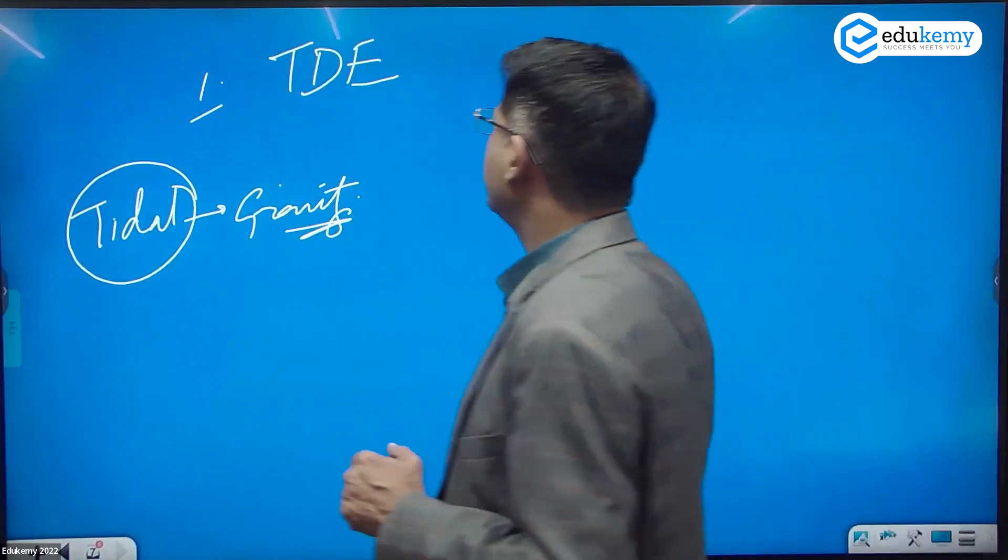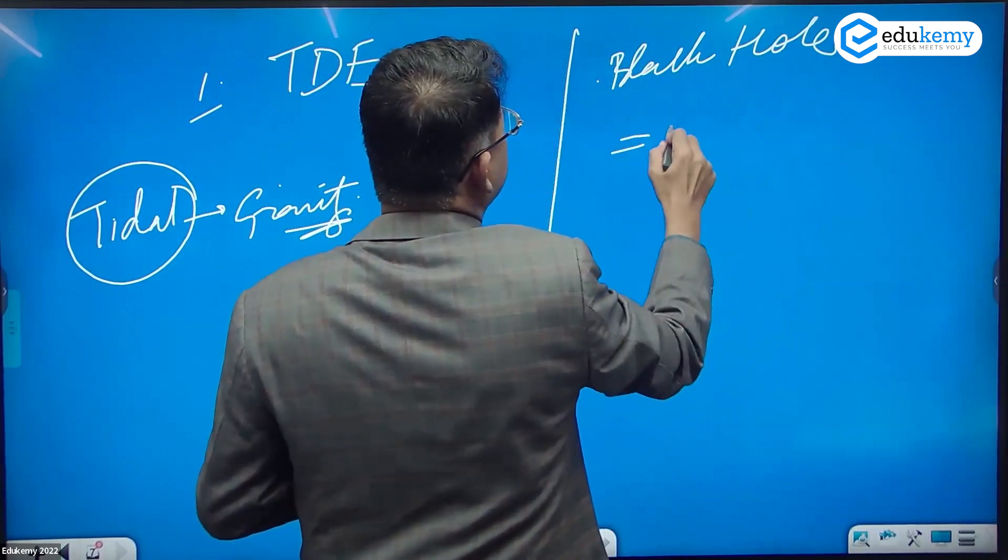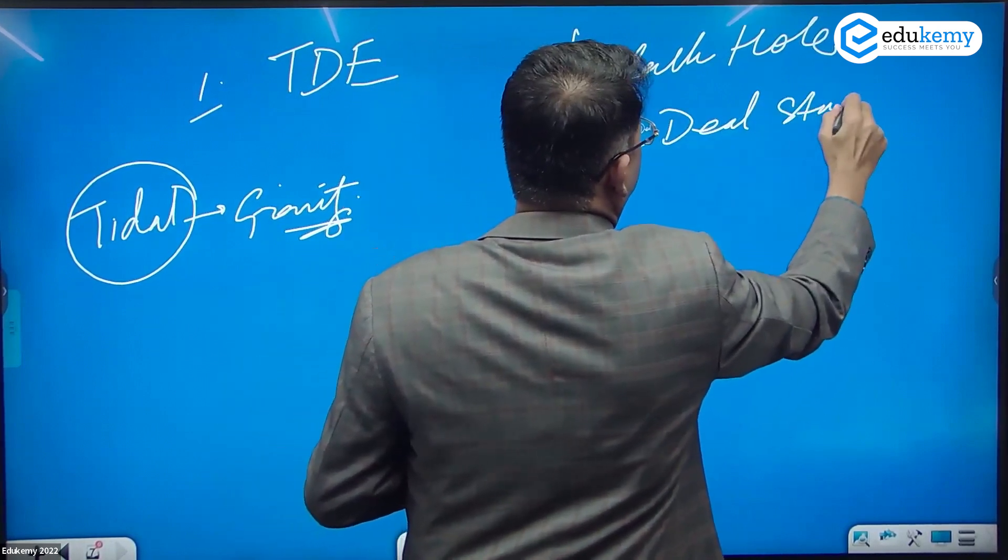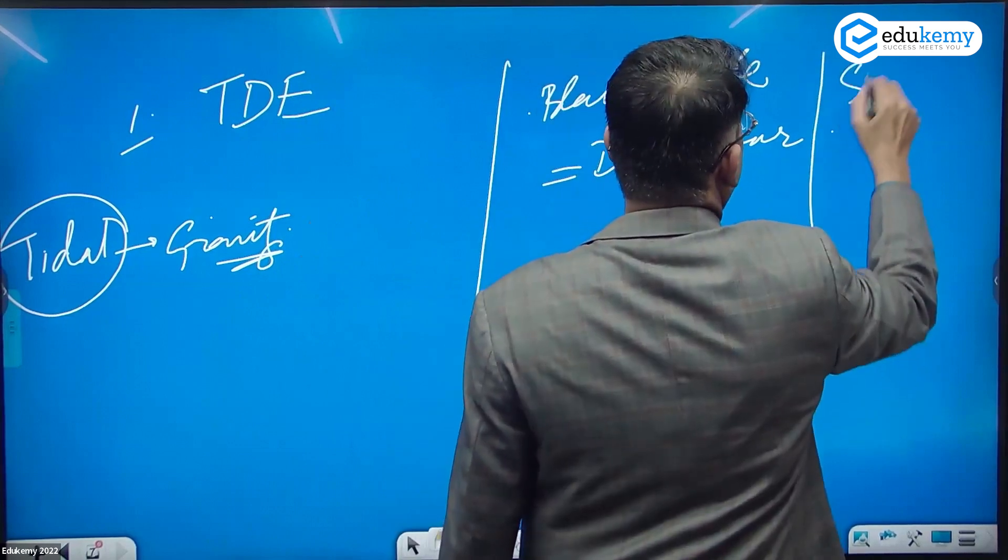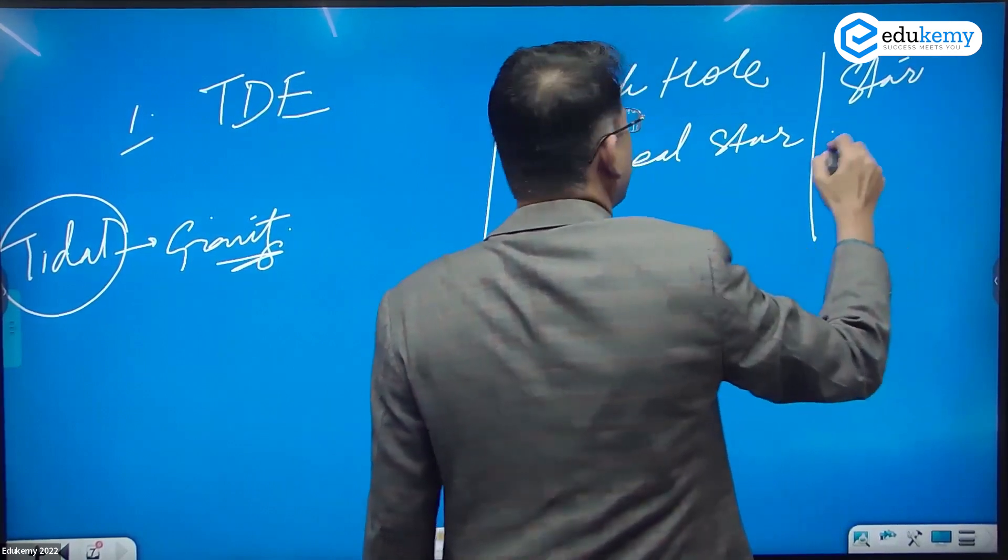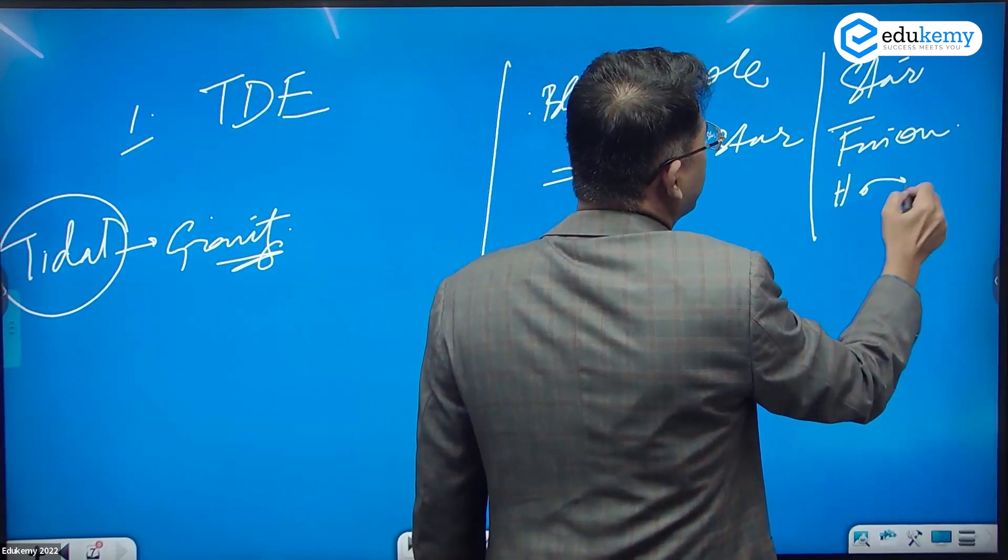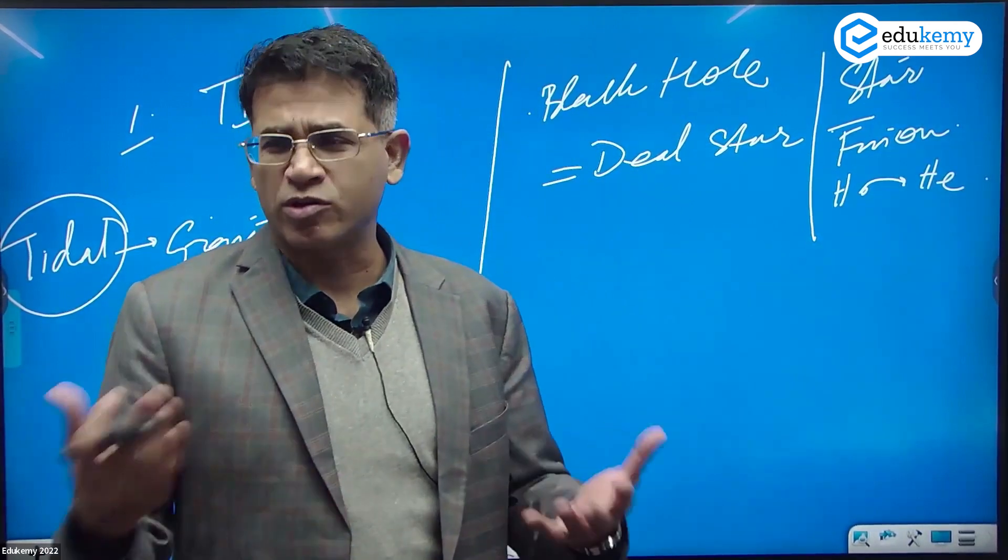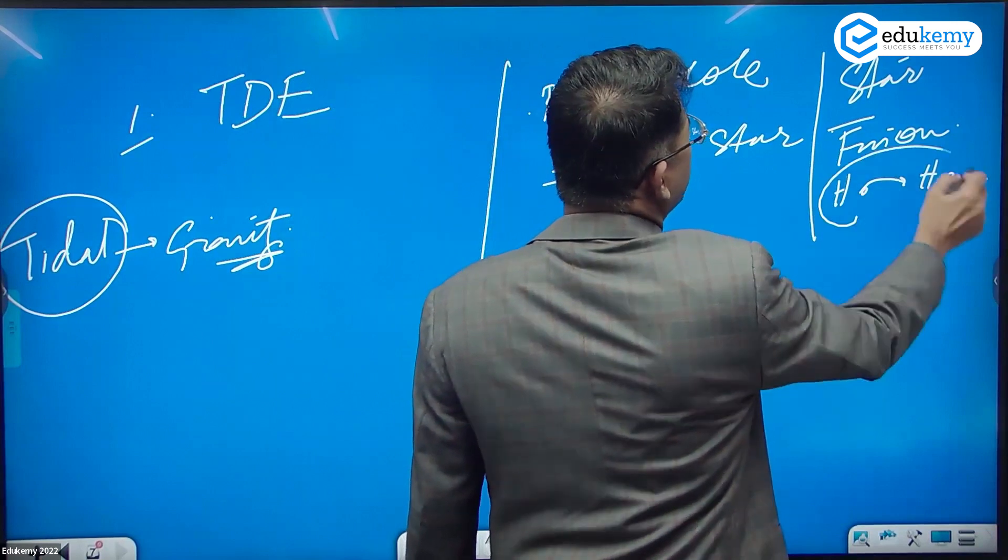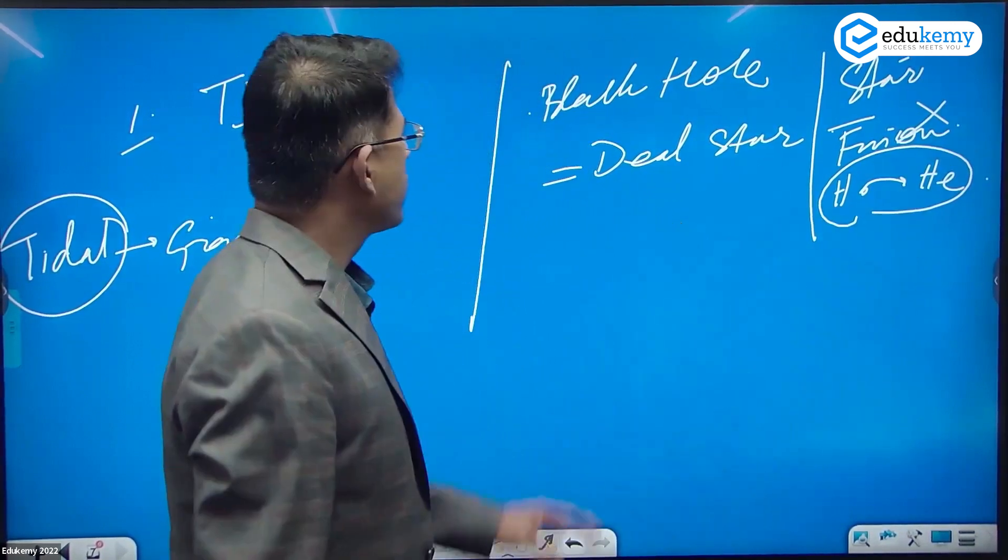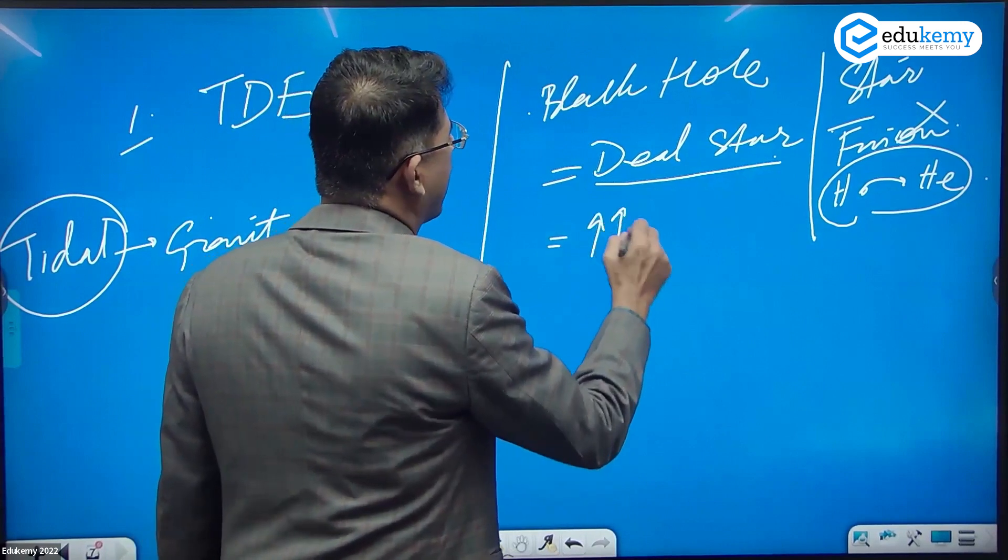Yesterday I explained what is a black hole. A black hole essentially is a dead star. A star has fusion reactions going on where hydrogen is rapidly converting into helium, and there are other elements also - carbon and other elements. When the hydrogen to helium fusion reaction is over, it becomes a dead star and has very high gravity.